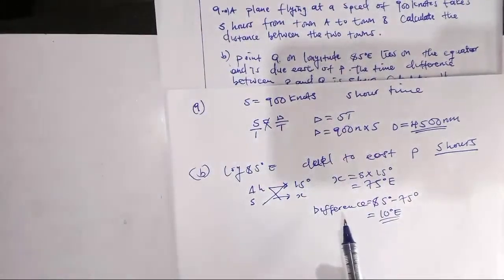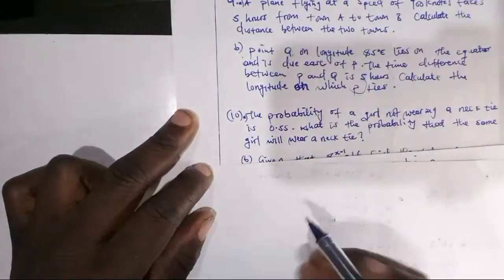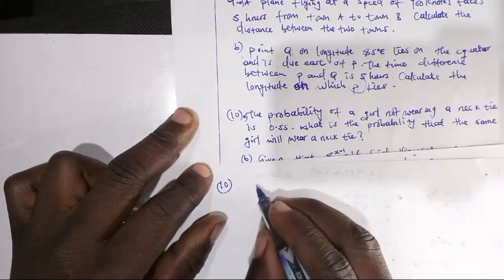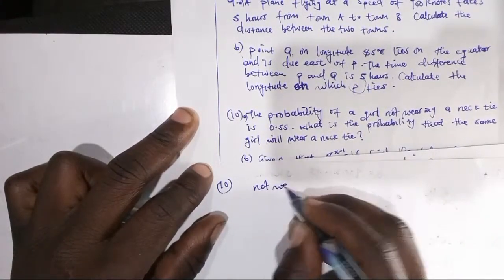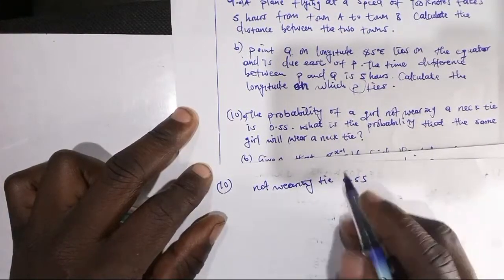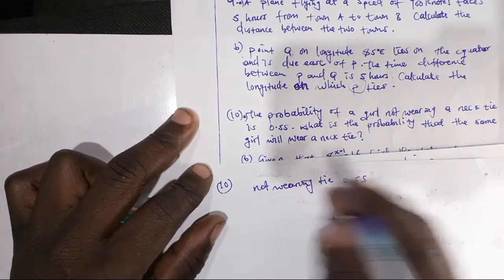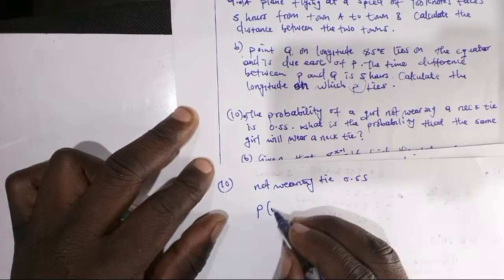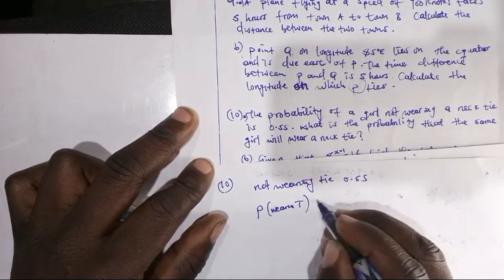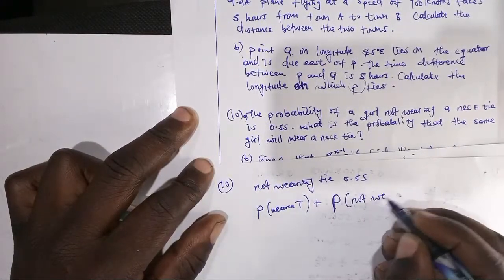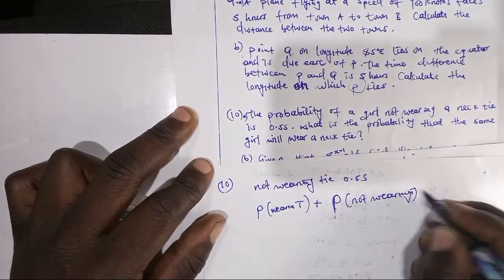Now let's move on to question 10. The probability of a girl not wearing a necktie is given. We write: the probability of not wearing a tie equals 0.55. What is the probability that the same girl does wear the necktie? The probability of wearing a tie plus the probability of not wearing a tie equals 1.